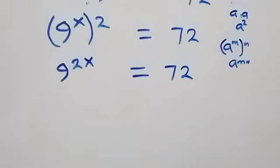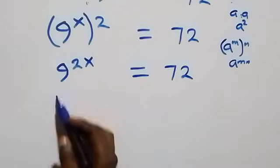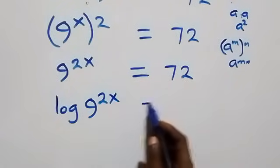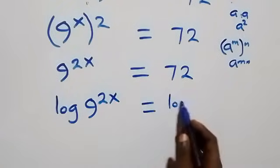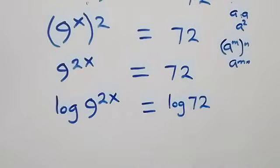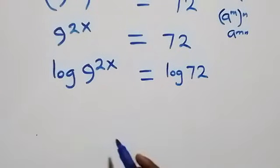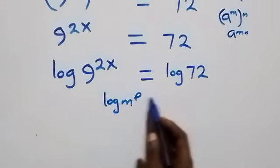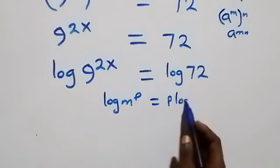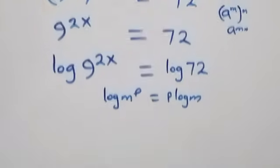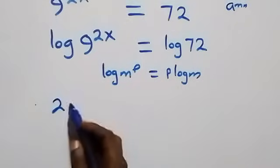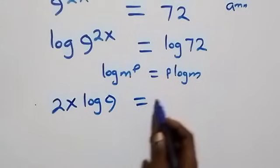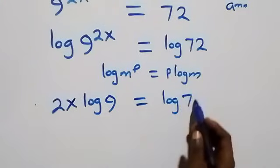The next step is to take the log on both sides. So we have log of 9 raised to power 2x equals log 72. We then apply the power law of logarithms: log of m raised to power p is the same as p·log m. So the power 2x comes down and we have 2x·log 9 equals log 72.